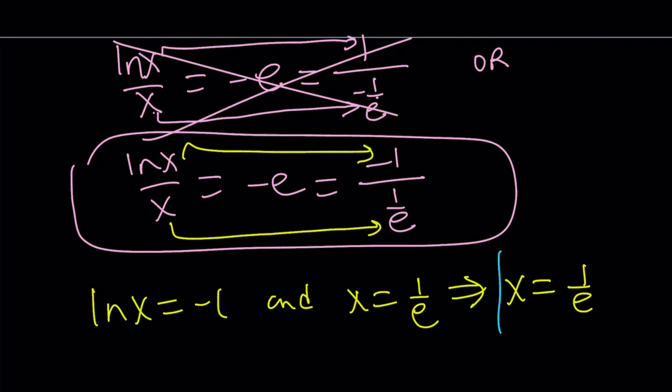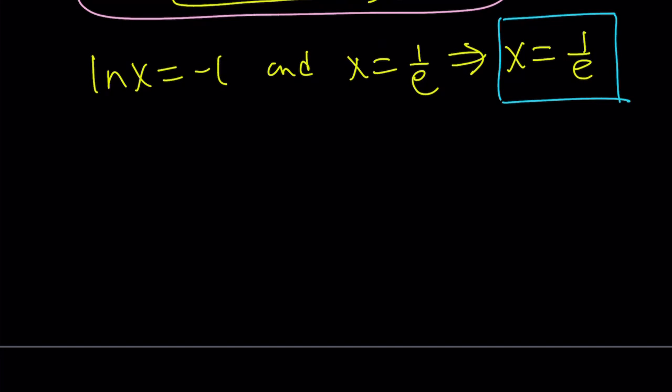So we got x equals 1 over e as a solution because it satisfies the equation. But is that the only solution? How do we find out? So let's get into a little bit of calculus here. Don't be scared. If you haven't done it before, it's fairly easy.